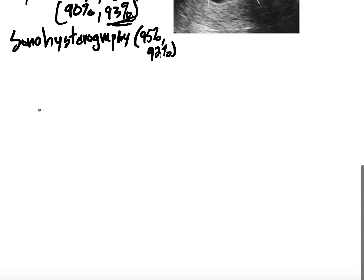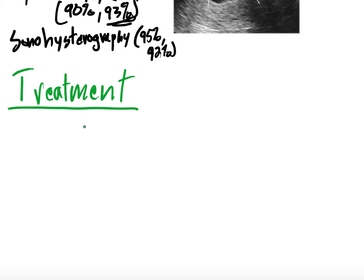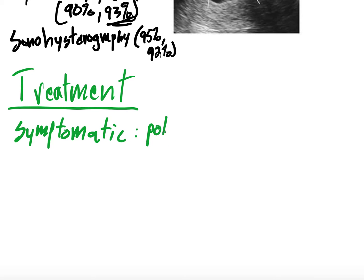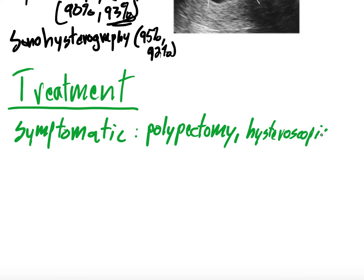For treatment: if these patients are symptomatic — having abnormal uterine bleeding, iron deficiency, and so on — you can do a polypectomy. You can also send the tissue to pathology. This is done through hysteroscopic guidance, so you can do a hysteroscopy for diagnosis and then a polypectomy while you're there.